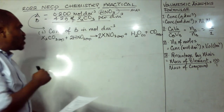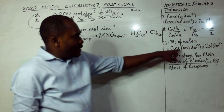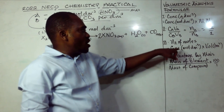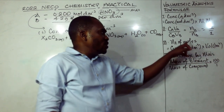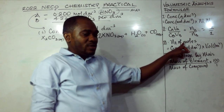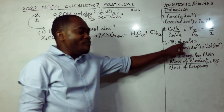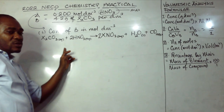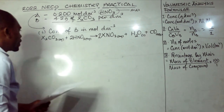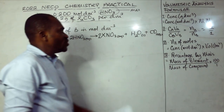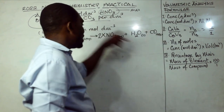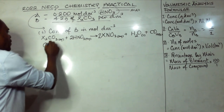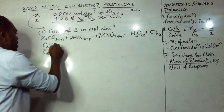The only formula we can use to calculate the concentration of B in mol/dm³ is the titration formula. Number of moles equals concentration times volume in dm³, but we don't know the actual number of moles of B that reacted in the titration, so that formula doesn't apply here. Therefore, the titration formula is the one to use.